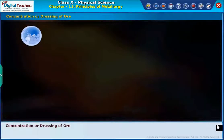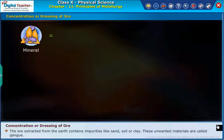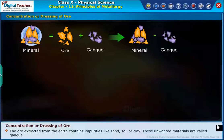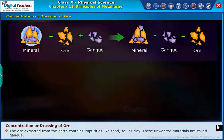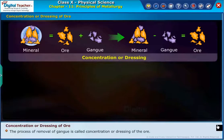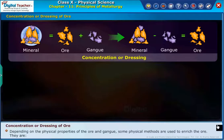Concentration or dressing of ore: The ore extracted from the earth contains impurities like sand, soil, or clay. These unwanted materials are called gangue. The process of removal of gangue is called concentration or dressing of the ore. Depending on the physical properties of the ore and gangue, some physical methods are used to enrich the ore.